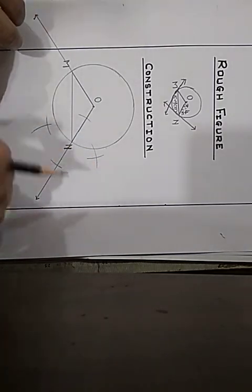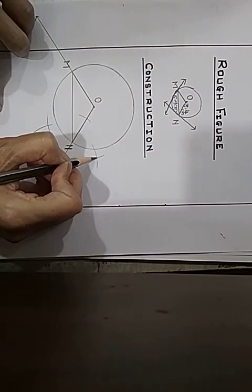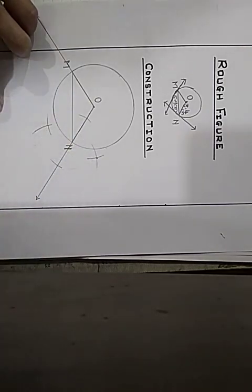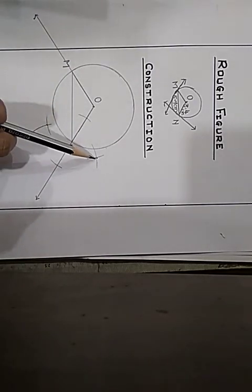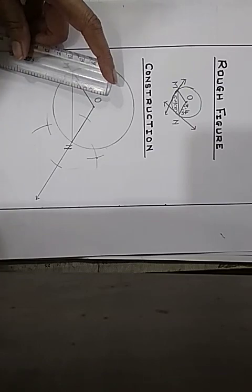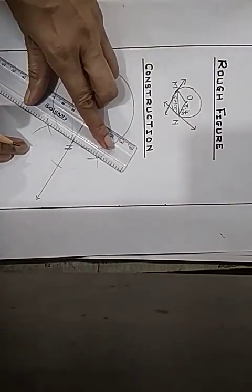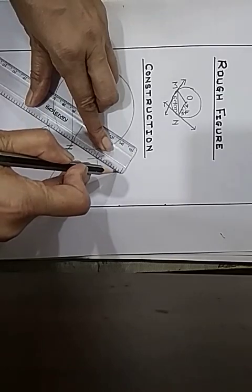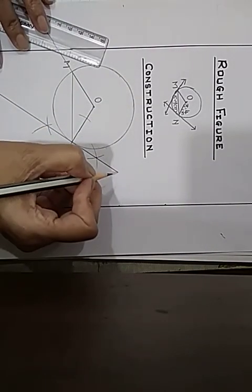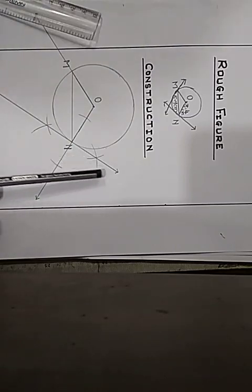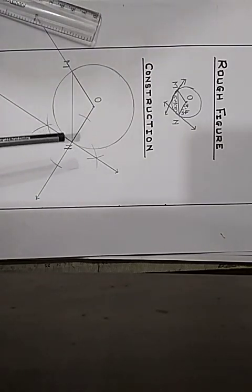I got the intersecting arcs. These intersecting points — this point and this point — along with point N, we will join. This is the tangent drawn at point N, which is on the circle.